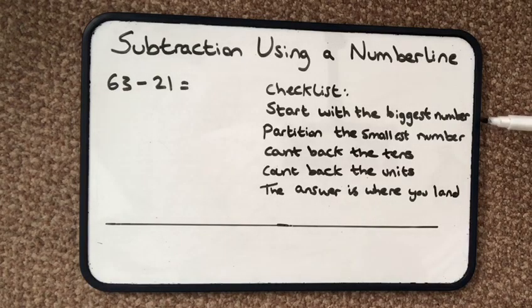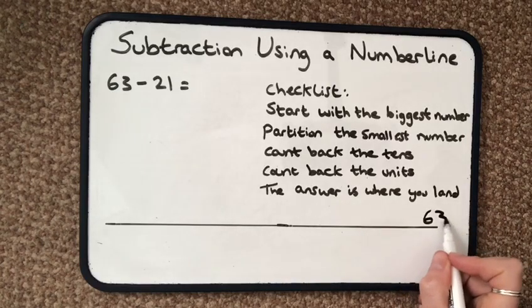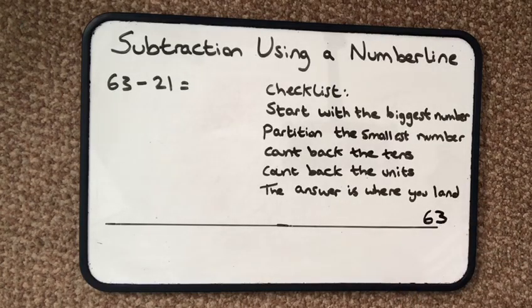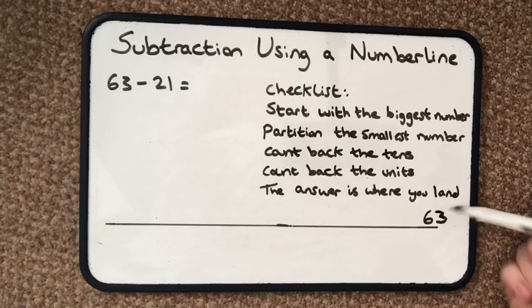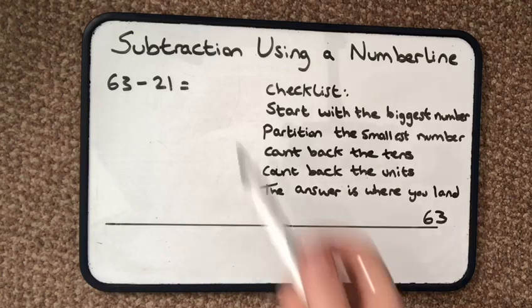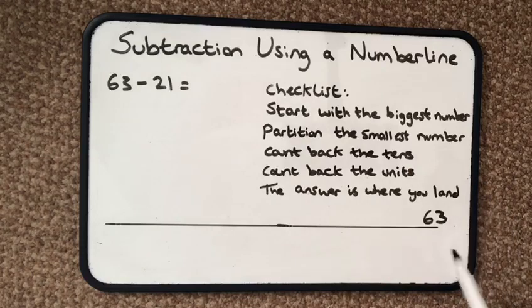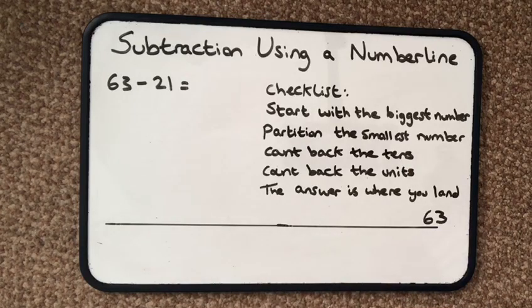Using my checklist, I'm going to start with the biggest number, 63. I'm going to write the numbers at the top of my number line and I'm going to go underneath my number line because I'm going to be doing subtraction. If I was adding I'd go above the number line, but if I'm taking away I go underneath, just to make it clear.